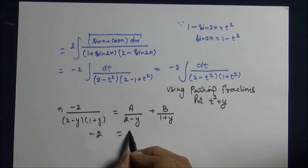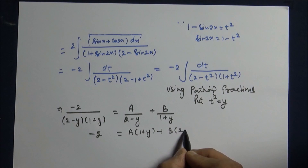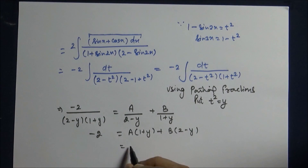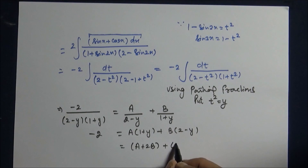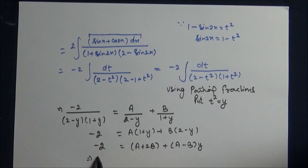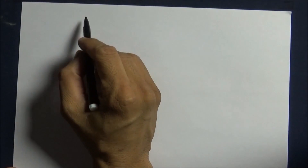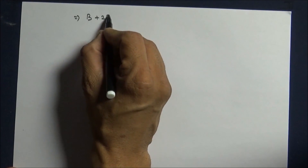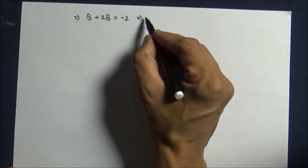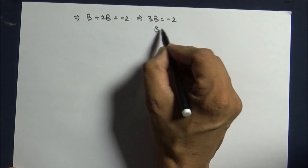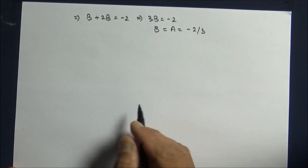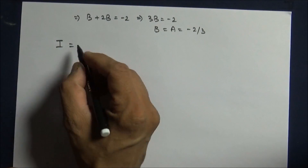There are many methods to find a and b. I'm using comparing the coefficients. When we compare the coefficients, we get one equation and another as 0, with that a equals b. So a equals b implies b plus 2b equals minus 2, so 3b equals minus 2, giving b equals a equals minus 2 by 3.